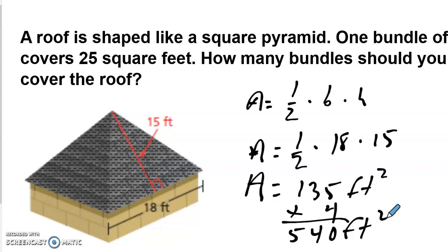Now we want to solve and figure out how many bundles, if each one covers 25 square feet. If you do 540, and you divide it by 25, you will end up with 22 bundles. A little bit left over, but we'll get it. All right, everybody. Good luck.